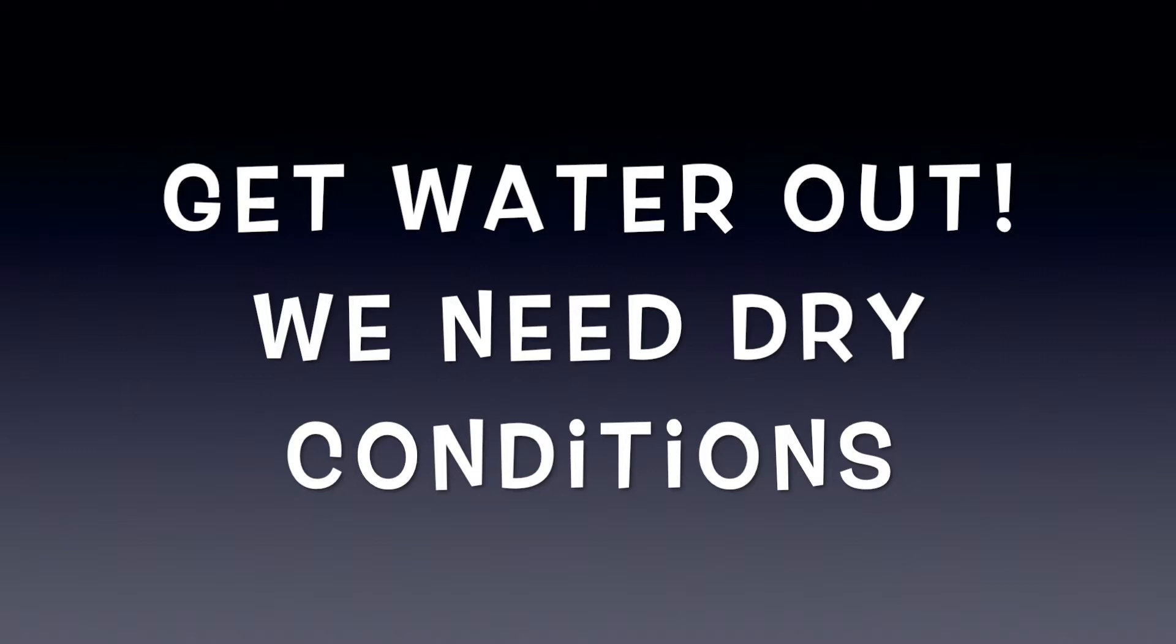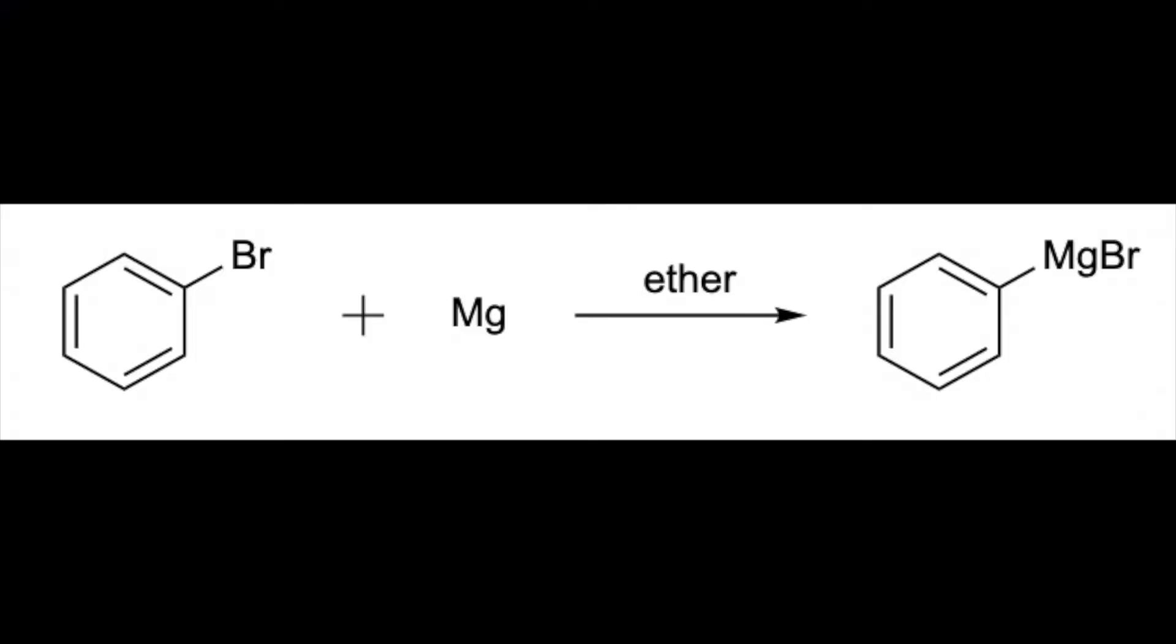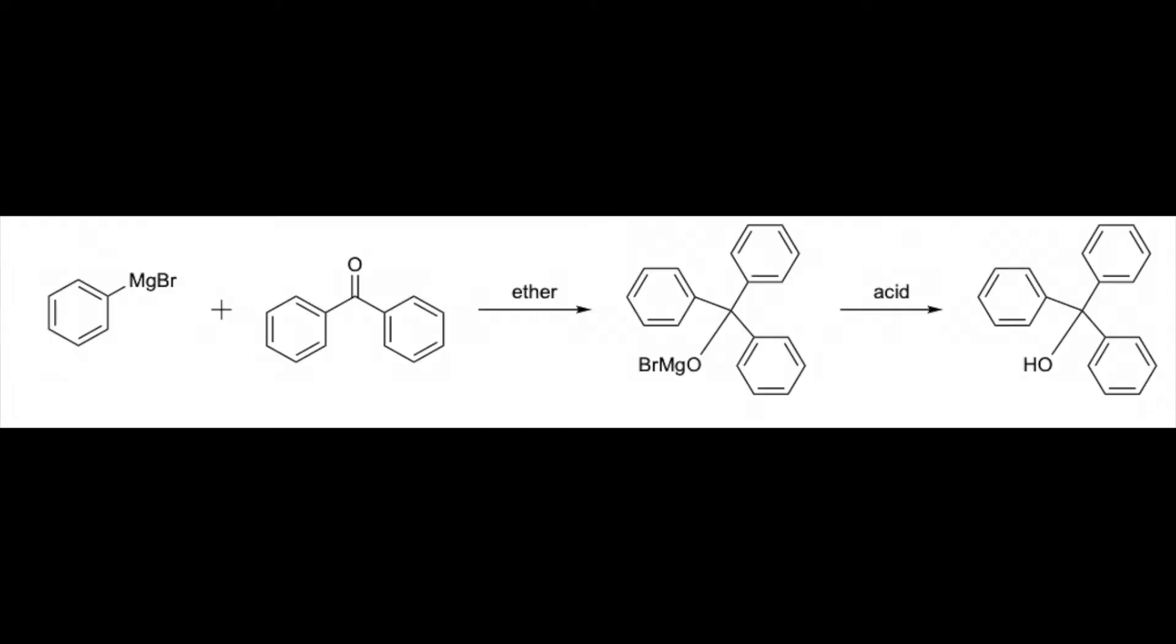There are special conditions required, however. We need a moisture-free environment for this reaction to be successful. This two-step reaction starts with the formation of the Grignard Reagent. We will react bromobenzene with magnesium metal in ether to make the Grignard. Once we have the Grignard formed, we will react it with benzophenone followed by treatment with acid to give us a tertiary alcohol, triphenylmethanol.